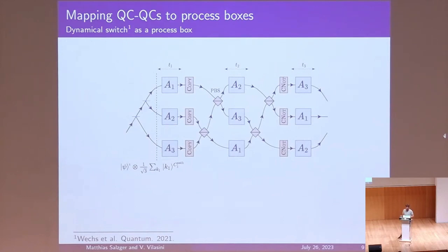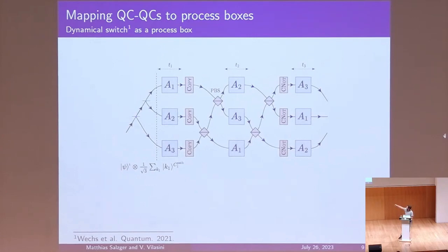Now I want to talk about the mappings we made, beginning with mapping QCQCs to process boxes, using one specific example: the dynamical switch. This is a specific QCQC with a proposal for experimental implementation. You see three agents A1, A2, A3 in indefinite causal order, along with various components like coherent copy gates, polarizing beam splitters, and CNOT gates. The polarizing beam splitters take photons from the agents and split them — one goes to A2, one goes to A3 — giving dynamic control of causal order depending on how A1 prepares her photon.